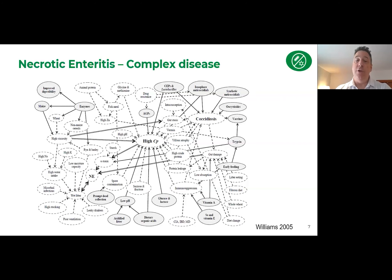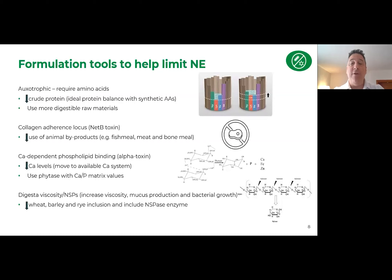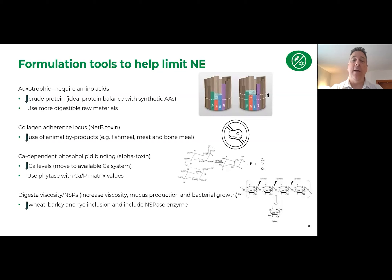Beyond general strategies, there are formulation approaches. Recall that Clostridium perfringens is auxotrophic, so it requires amino acids from the host. One nutritional strategy is to reduce the amount of crude protein in your diet by balancing protein using synthetic amino acids. This lowers the protein level going into the hindgut where Clostridium typically proliferates, minimizing the indigestible protein those bacteria can use. Using raw materials with higher digestibility can also help reduce crude protein levels in diets.